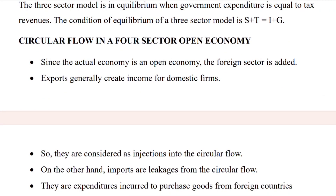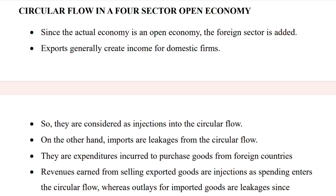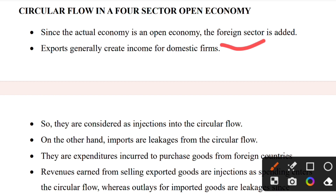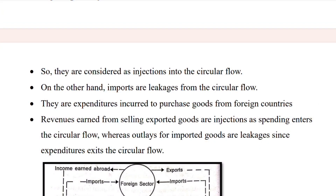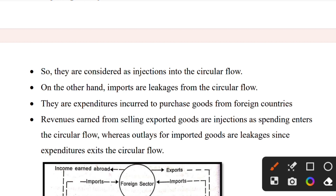Circular flow in a four-sector open economy: in addition to the household, firm, and government sectors, the foreign sector is added. Exports generally create income for domestic firms and are considered injections into the circular flow. Imports represent a leakage from the circular flow, as expenditure is incurred to purchase goods from foreign countries. Revenue earned from selling export goods is an injection, while spending on imports is a leakage.